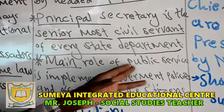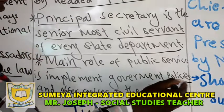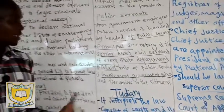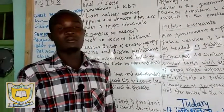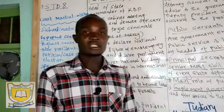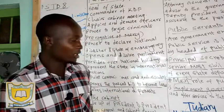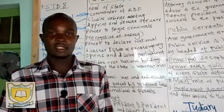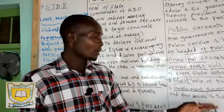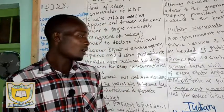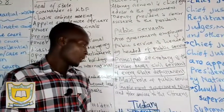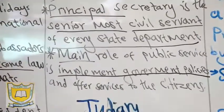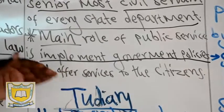The main role of public service is to implement government policy. When we say implement government policy, we mean making sure that whatever has been passed is carried out, and also making sure that members of the public know what is going on. For example, the chief — an example of a public servant — can call a baraza or a meeting and tell members of the public that the government has said this and this. That is what you call implementation. They also offer services on behalf of the government to the citizens.